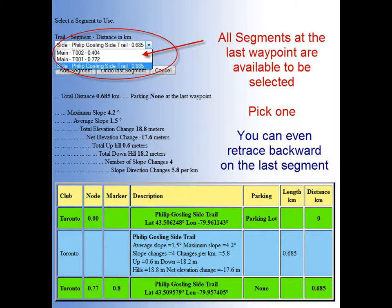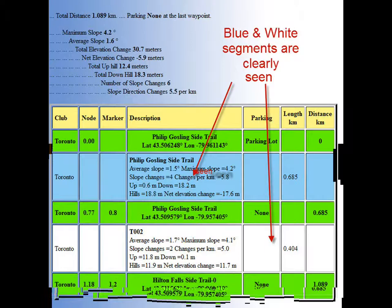Note: main trail segments are named in sequence from Queenston to Tobermory, starting with the initials of the club therein — in this case, T for Toronto. So we'll select T002 to continue our hike. The statistics are accumulated and the white segment is added. Once again, the next waypoint is automatically added. This process continues as we walk through the virtual hike.